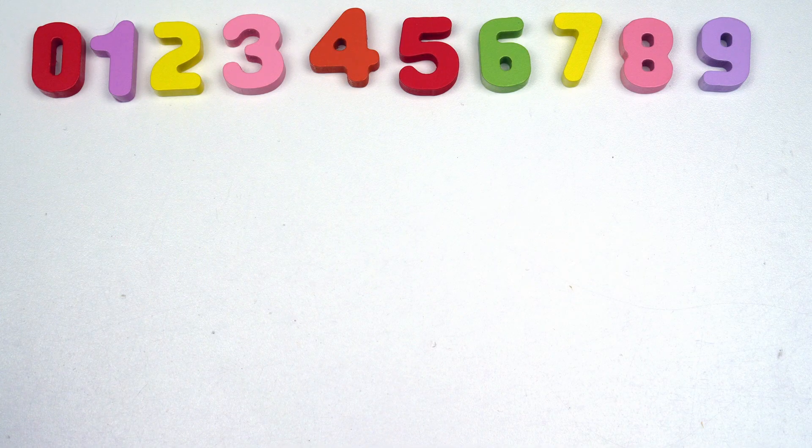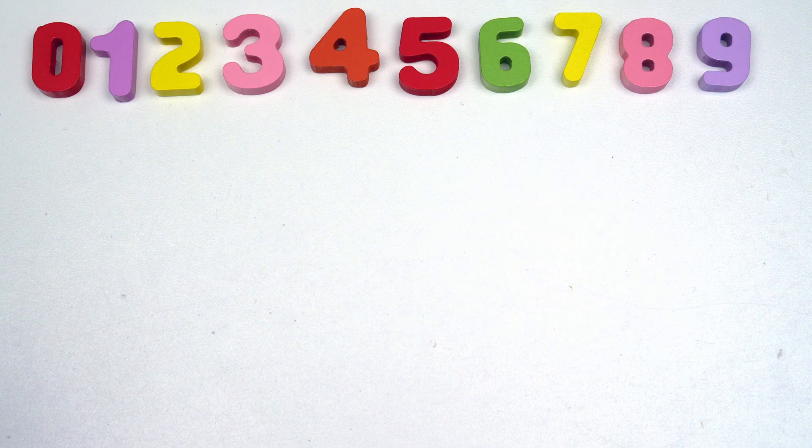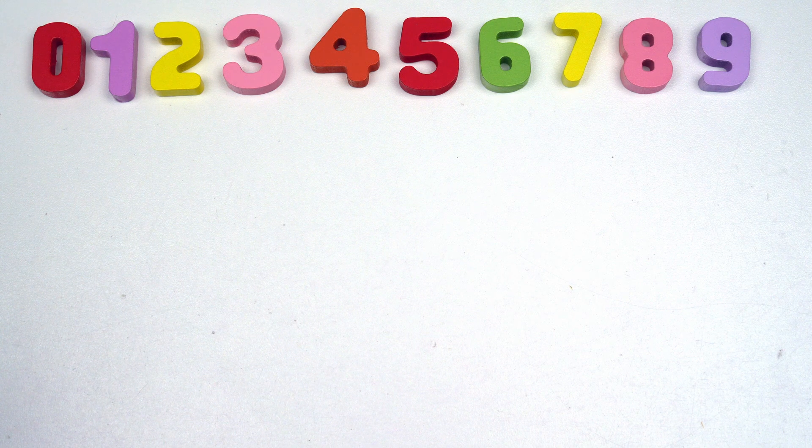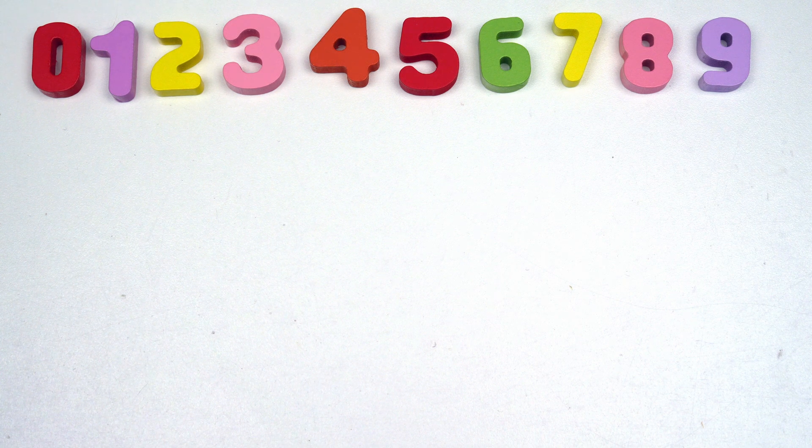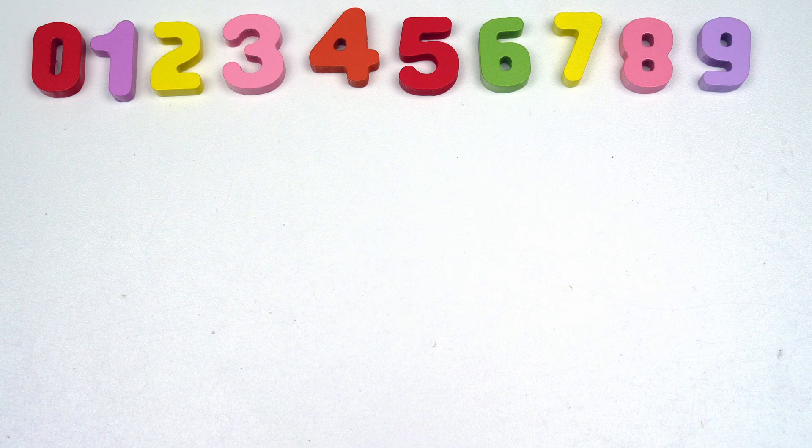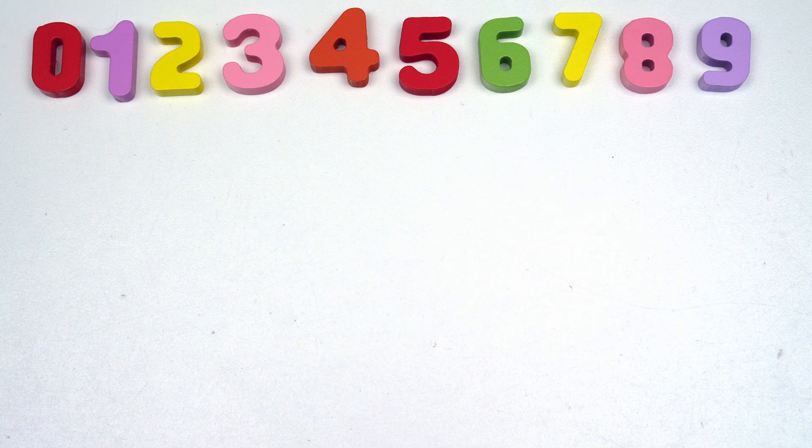A number bond shows us how two smaller numbers can come together to make a bigger number. It's like a team. When the two numbers work together, they make a whole. Or it could be like a puzzle. You take your smaller pieces, put them together to get the larger one.